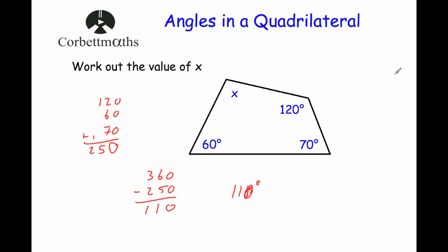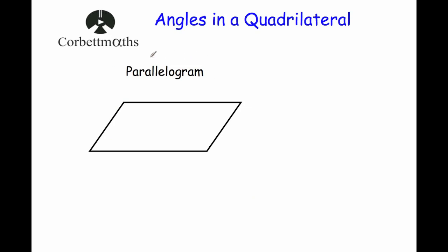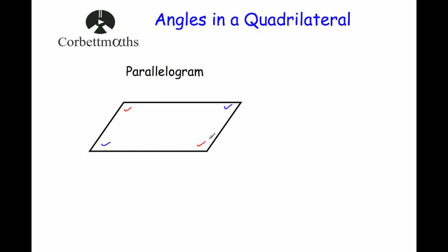Now we're going to look at some special quadrilaterals. Here we've got a parallelogram. In a parallelogram, the opposite angles are equal to each other. So the obtuse angle is equal to the other obtuse angle, and the acute angles are equal to each other. The opposite angles in a parallelogram are always equal to each other.